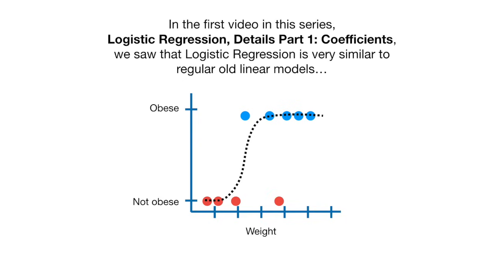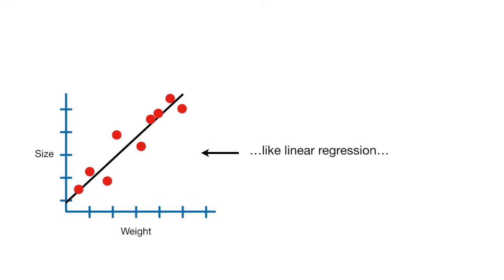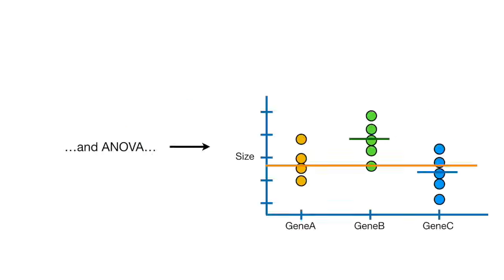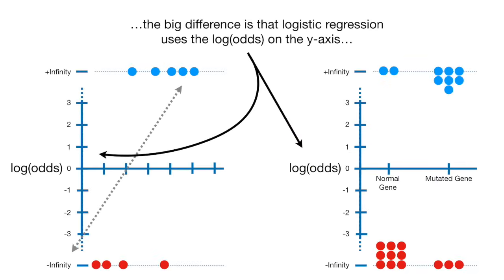In the first video in this series, logistic regression details part one coefficients, we saw that logistic regression is very similar to regular old linear models, like linear regression, t-tests, and fancy stuff like multiple regression and ANOVA. The big difference is that logistic regression uses the log odds on the y-axis.